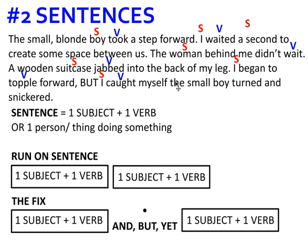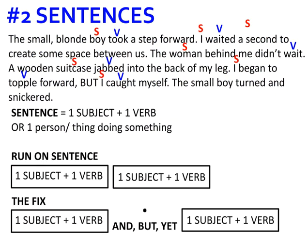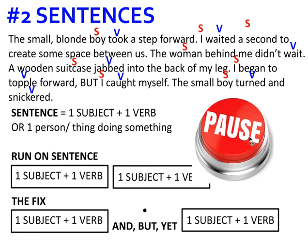Lastly, 'The small boy turned and snickered.' Period. My subject is 'boy' and he actually has two verbs — turning and snickering. At this point, I'd love for you to pause the video, go back and read your narrative, and see if there are any spots where you need to put a period or one of these three conjunctions — and, but, or yet — to give the reader a breath or a pause.